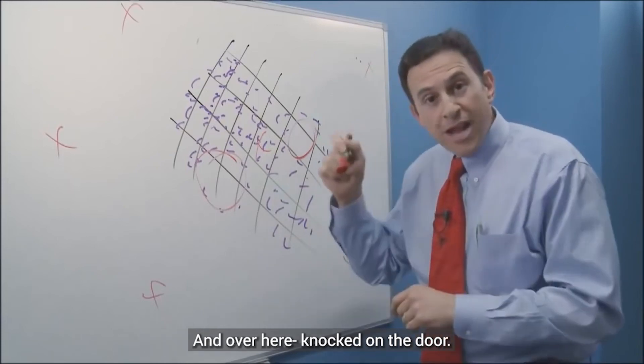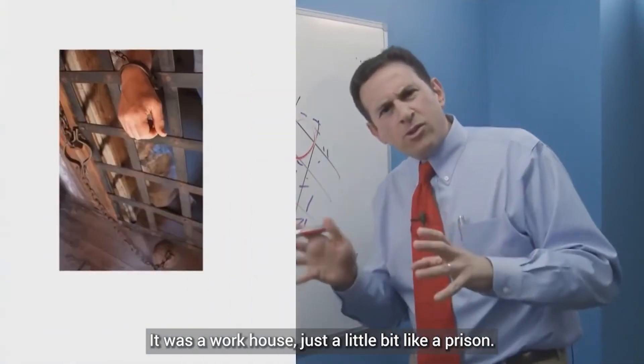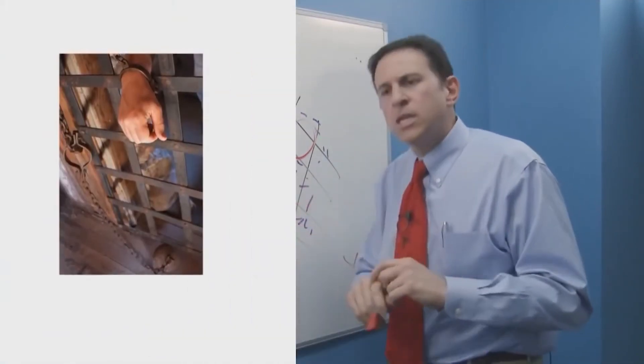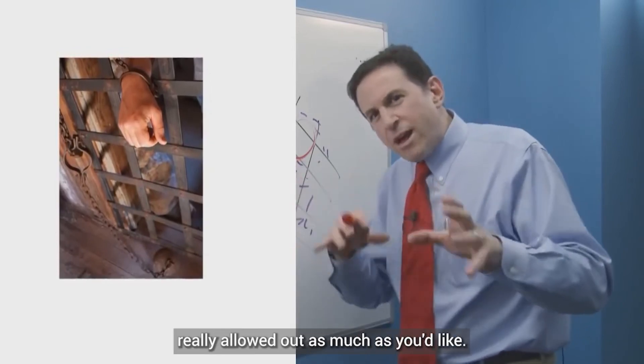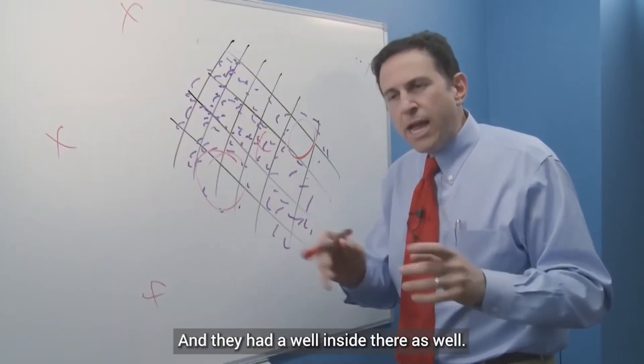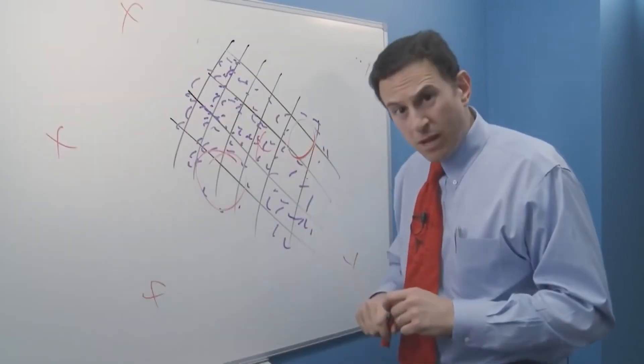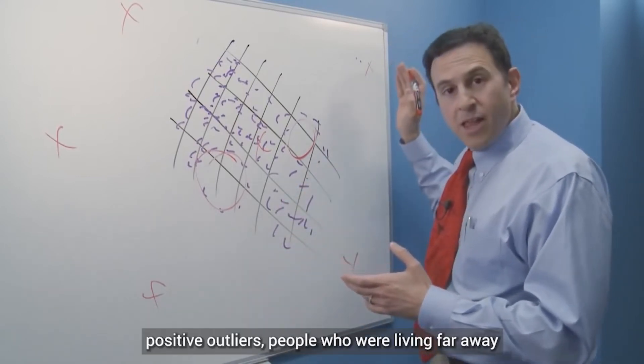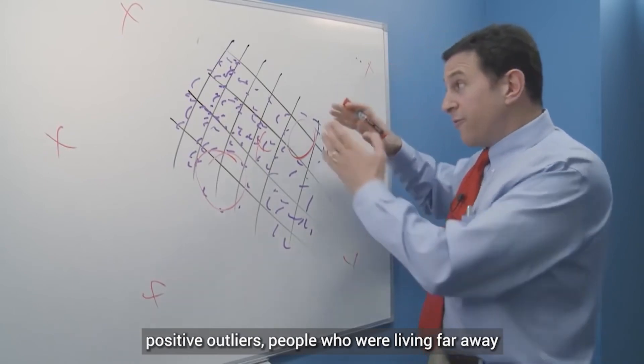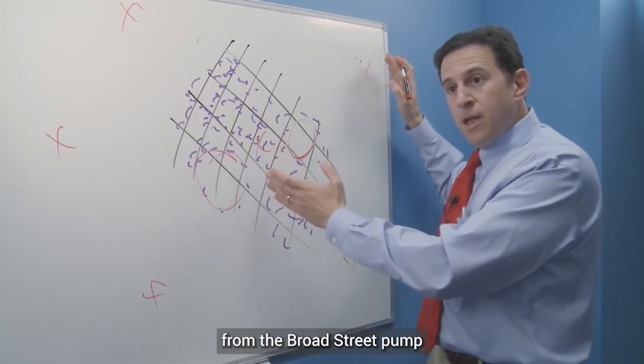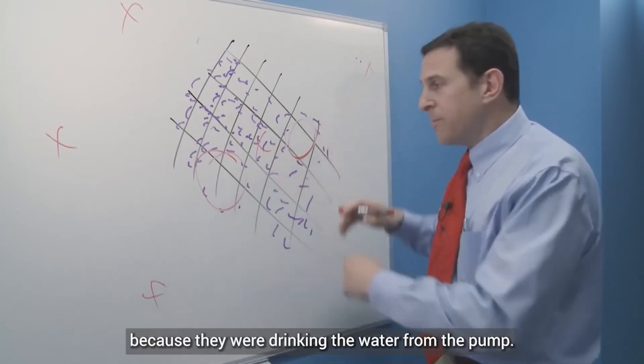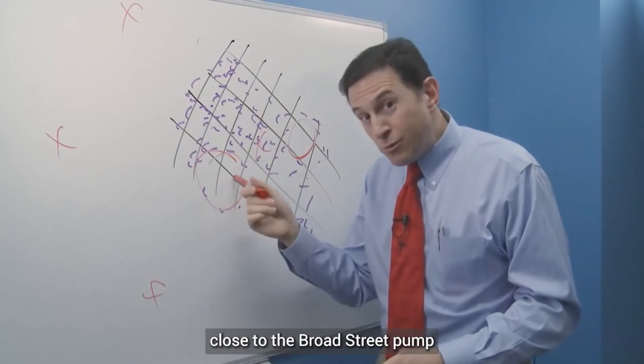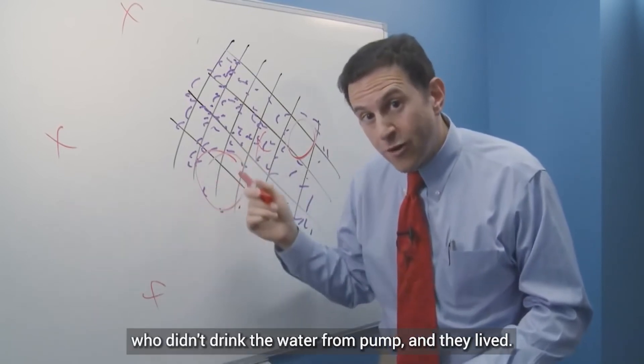And over here, knocked on the door. It was a workhouse, which is a little bit like a prison. And so the people weren't really allowed out as much as you'd like, and they had a well inside there as well. So, he had positive outliers, people who were living far away from the Broad Street pump, but died because they were drinking the water from the pump. And he had people who were living close to the Broad Street pump who didn't drink the water from the pump, and they lived.